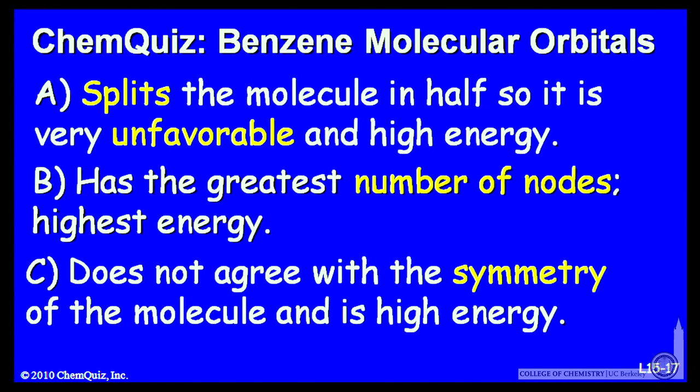Let's look at a possible explanation for each answer. A splits the molecule in half, so that's very unfavorable and will make it high energy. B has the greatest number of nodes, so it's the highest energy. Or C does not agree with the symmetry of the molecule and is high energy. Think about those three options for a minute and make another selection.